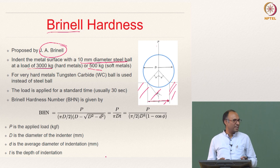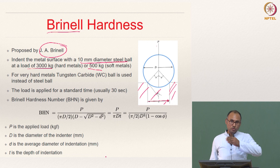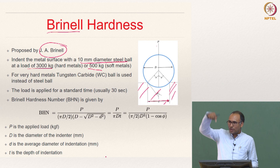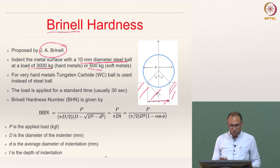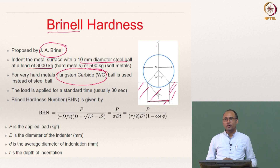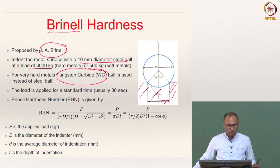If the material is extremely hard, the indenter has to be stiffer than the material. By applying the load, the indenter should not deform — you are trying to measure the hardness of the surface. Hence, if you are going to measure extremely hard surfaces, steel may not be the right choice. In those cases, you will use tungsten carbide. If you intend to measure hardness of surfaces harder than tungsten carbide, you probably want to use some other procedure. For very hard metals, a tungsten carbide ball is used instead of a steel ball.